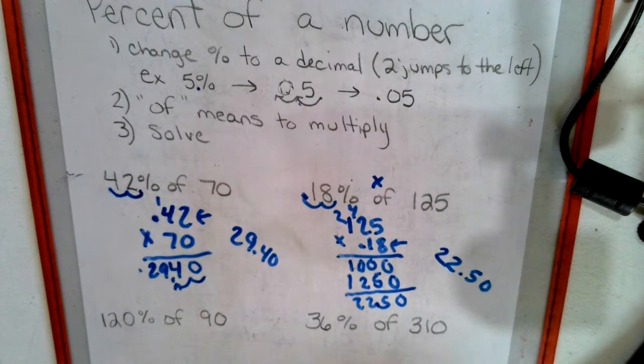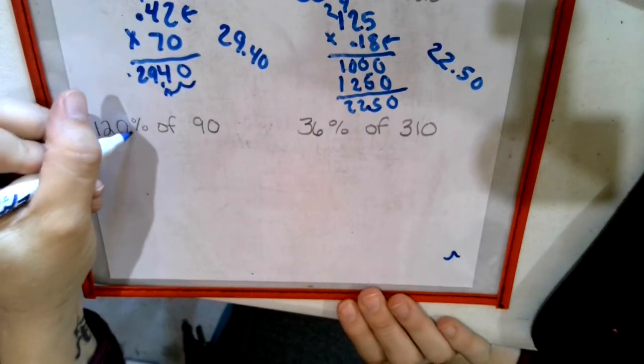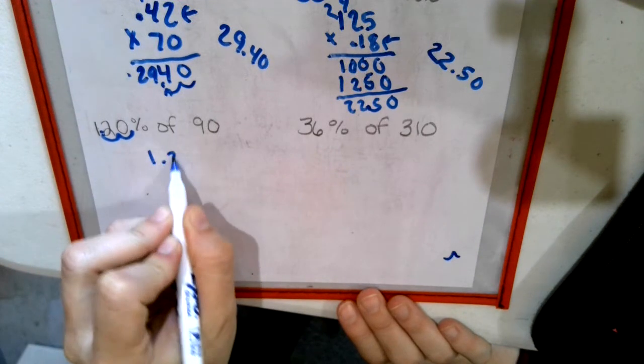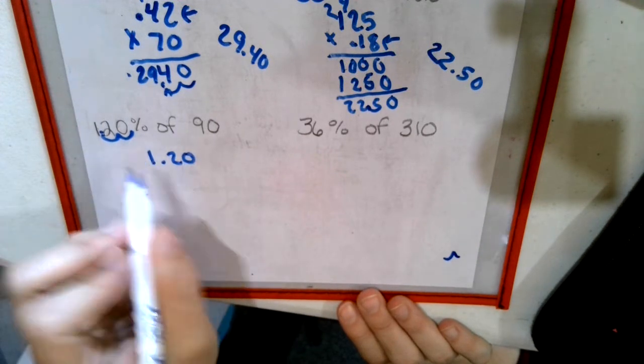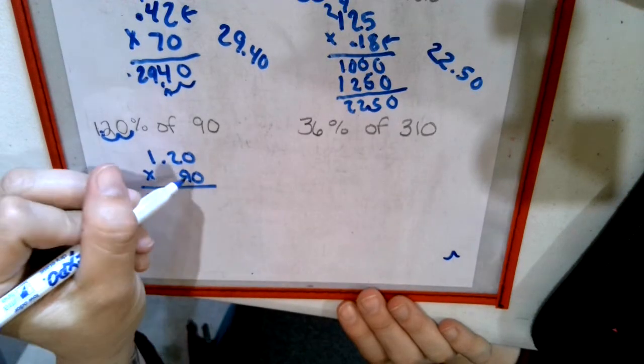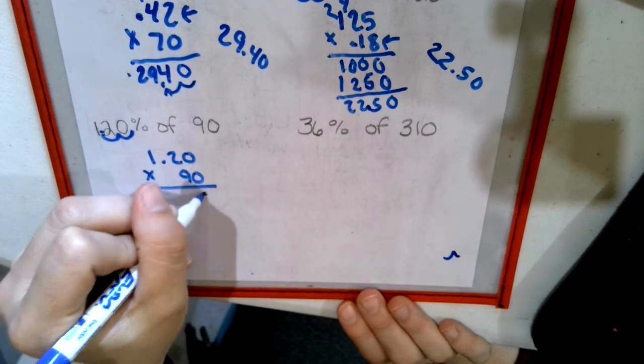Now, bottom. Two jumps, 1, 2. We're in the middle of a number - 1.20. That's a longer set of numbers. 'Of' means times, times 90. This is where we'd have 0, 0, 0 in your top line. We can just put a 0.